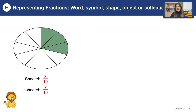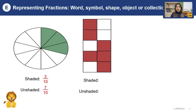Look at the second picture. How many shaded parts can you see? There are six pink parts out of ten, so we can write it as six over ten. What about the unshaded parts? If we have six shaded parts, it means we have four unshaded parts, and we can write it as four over ten.